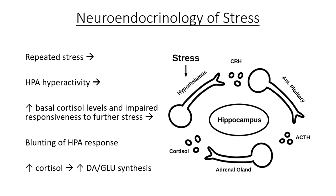This feedback lets the system know that there has been an adequate concentration of cortisol to support the body under stress. The hippocampus assists in memorizing this response so that in the future the stress response can be initiated or stopped based on the stressor. Repeated or severe stress, however, results in hypothalamic-pituitary-adrenal, or HPA, hyperactivity. This contributes to an increase in basal cortisol levels, impaired responsiveness to further stress, and blunting of the normal inhibitory feedback mechanisms of the HPA axis.